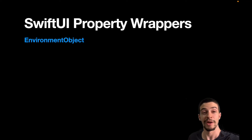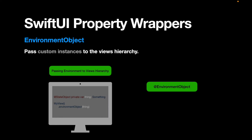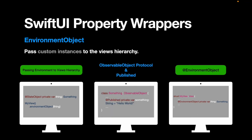Last but not least, we have @EnvironmentObject, which allows us to pass custom instances to the view hierarchy. It means that any subview at any level can refer to the environment object. For example, I can pass my state object to the view hierarchy using the method environmentObject and inserting my custom class. Now at any subview and any level, I can access this object with the @EnvironmentObject property wrapper. Our custom instance needs to conform to the ObservableObject protocol, and this custom class can have a @Published property wrapper associated in its variables to automatically trigger any reference to this custom class.